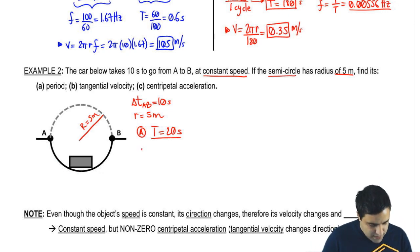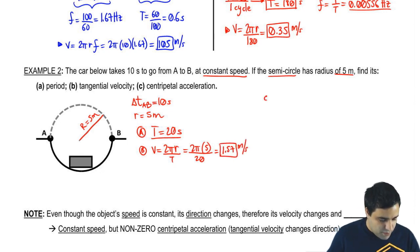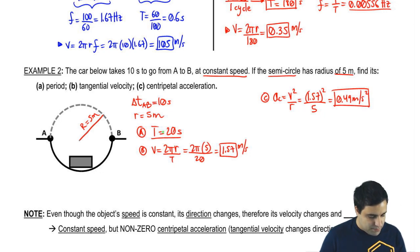Find the tangential velocity. Now, this is just plug and chug. V equals 2πr over T. 2πr is 5. T is 20. And if you do this, you get 1.57 meters per second. And then, for part c, the centripetal acceleration, it's just v squared over r. So, 1.57 squared over r, which is 5. This gives you 0.49 meters per second squared. So, these are the answers for this question.